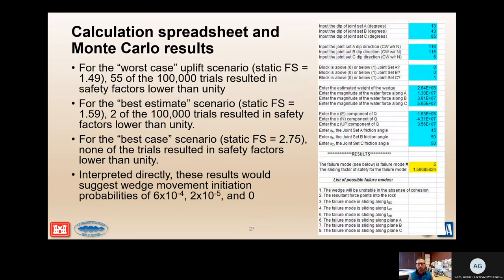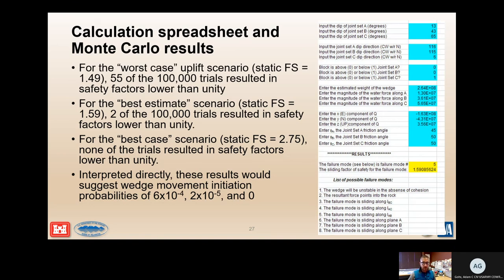The figure on the right shows the analysis set up in a spreadsheet. For the worst-case uplift scenario, 55 of 100,000 Monte Carlo iterations resulted in factors of safety lower than one. For the best-estimate scenario, two of 100,000 iterations resulted in safety factors lower than one. For the best-case scenario, none of the iterations resulted in a factor of safety lower than one. Interpreted directly, these results suggest wedge movement initiation probabilities on the order of 6×10⁻⁴, 2×10⁻⁵, and essentially zero.